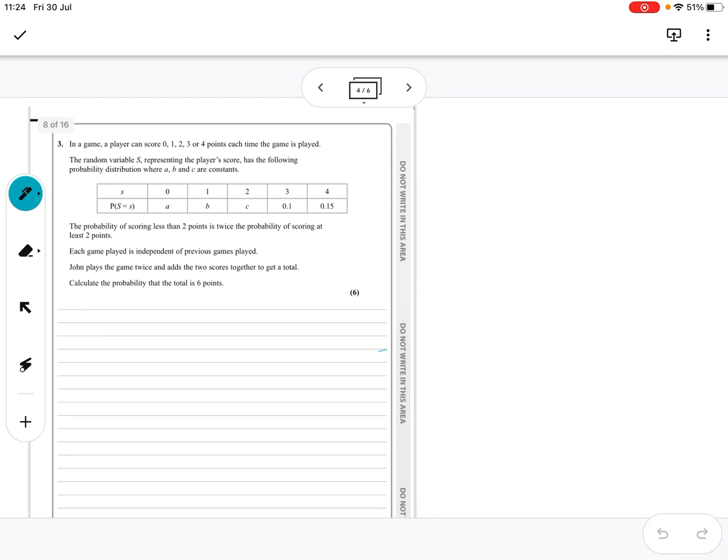John plays the game twice and adds the two scores together to get the total calculated probability. Okay, so there are unknowns here. There's two different ways of looking at it. This bit, John plays the game twice, is like a probability tree. You multiply, if that was A and that was A, you'd get A squared. You multiply the probability across and then add them up as you go down, and it would equal 1.